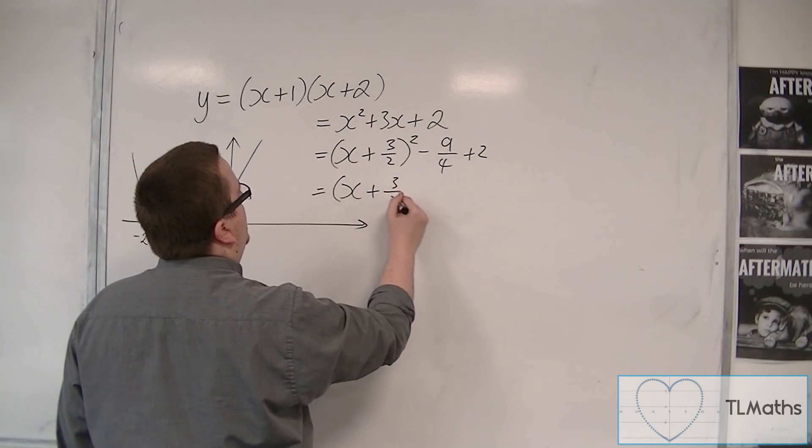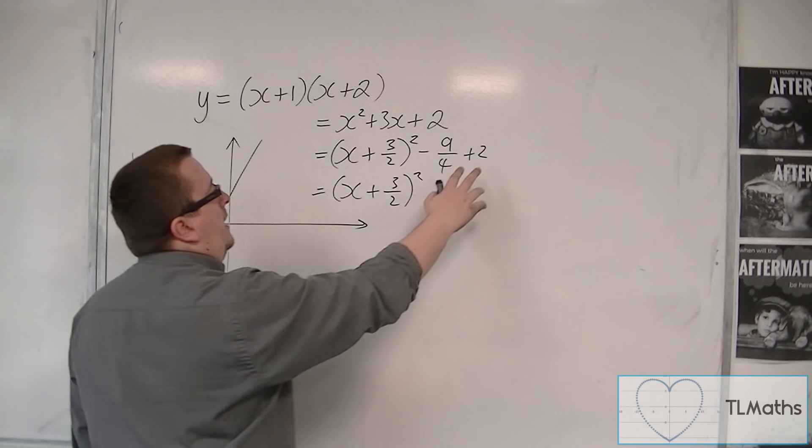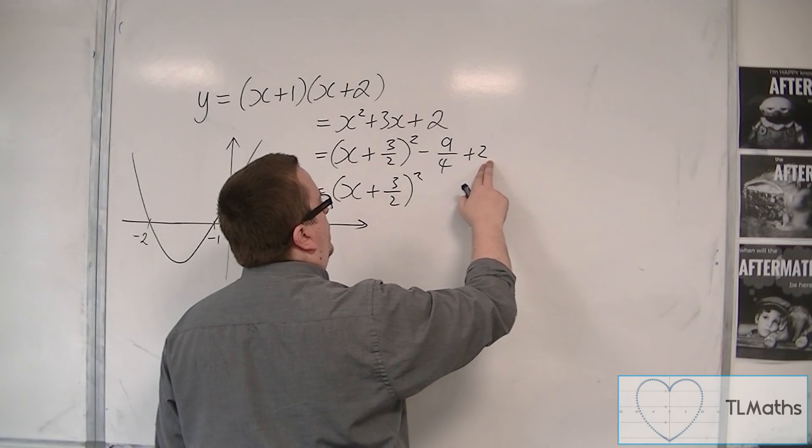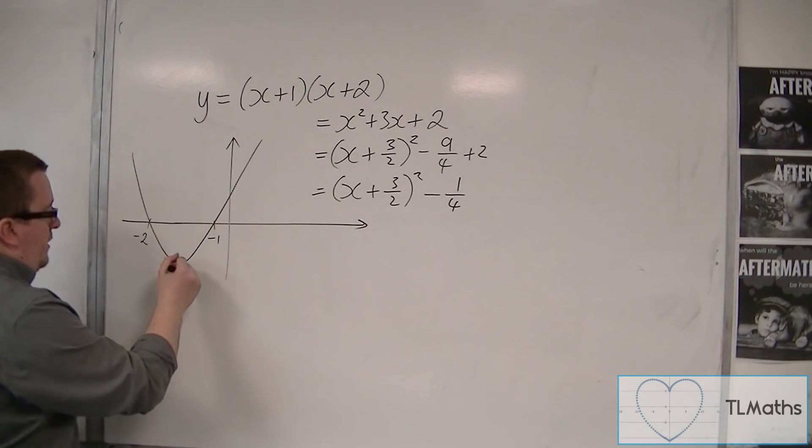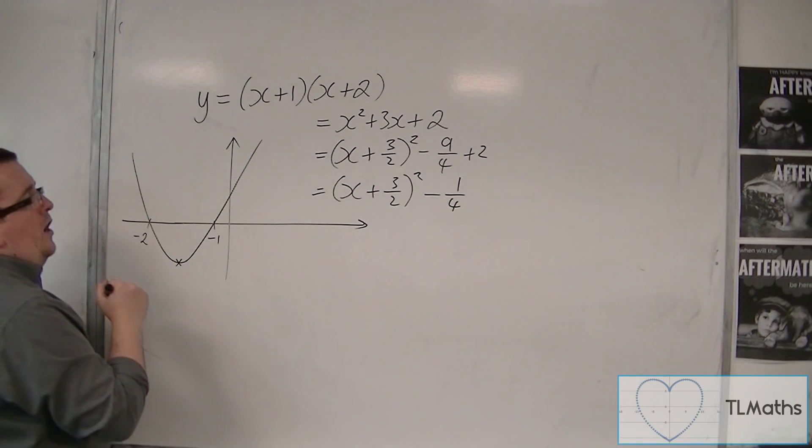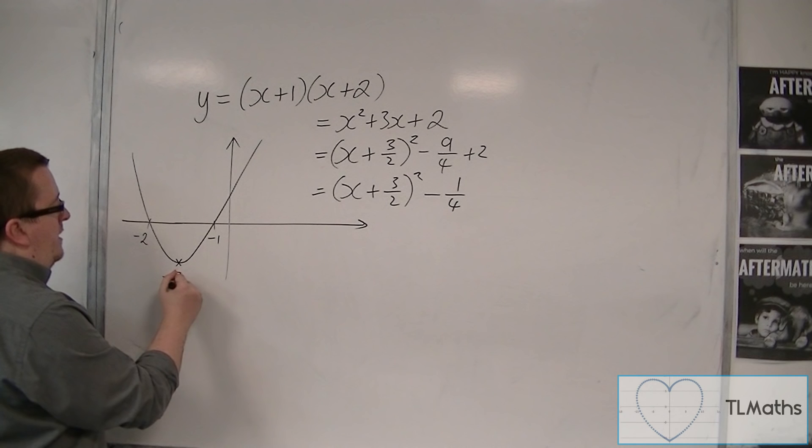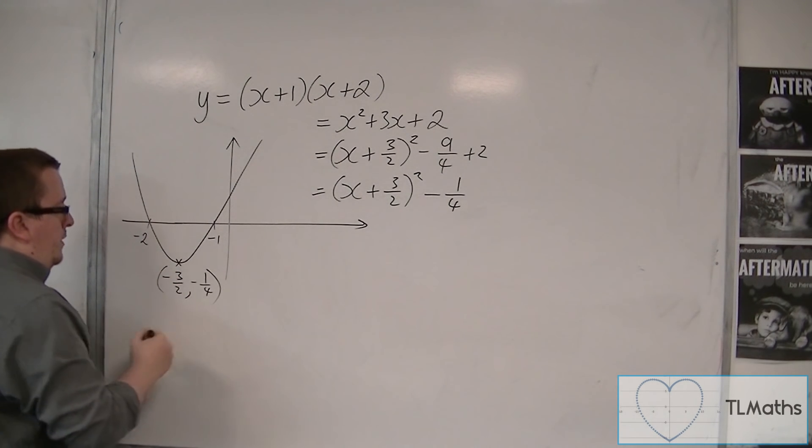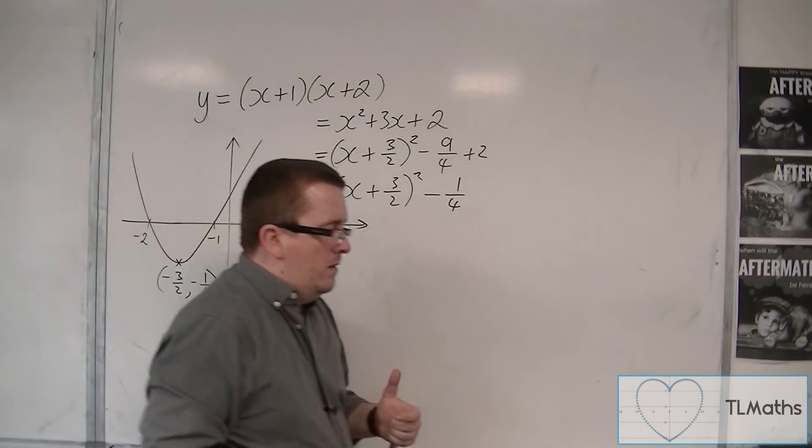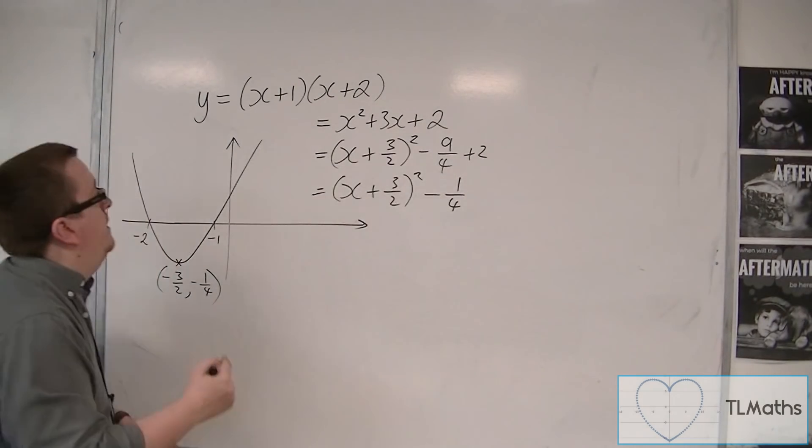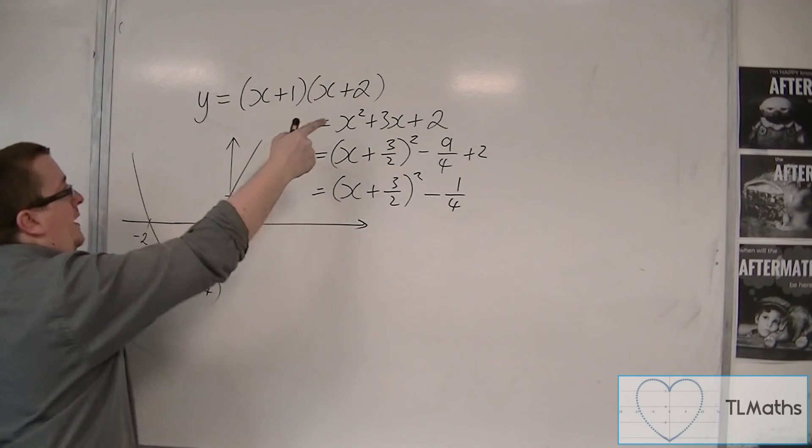So (x plus 3 halves) squared, that is 8 quarters, so we've got minus 1 quarter. And so the coordinates of this point are at minus 3 halves, minus 1 quarter. Where it's crossing the y-axis, that's at 2.